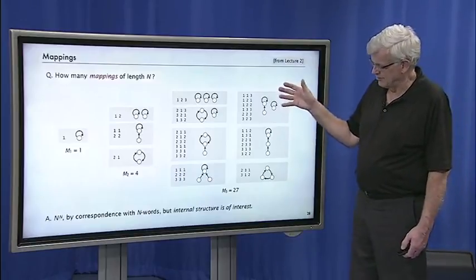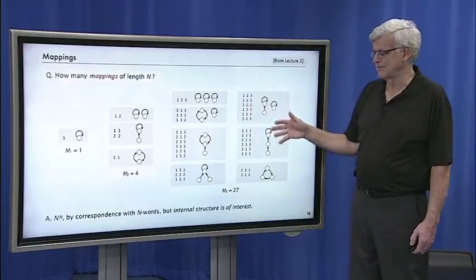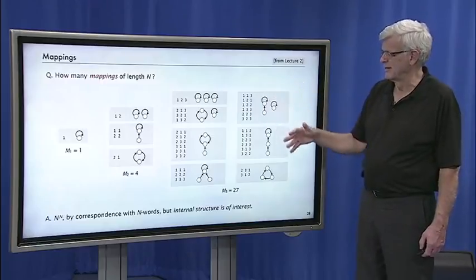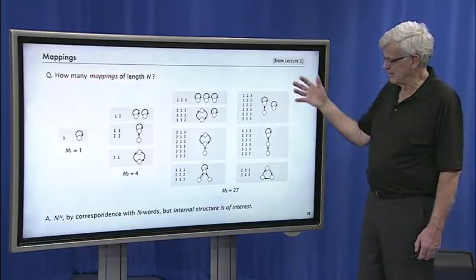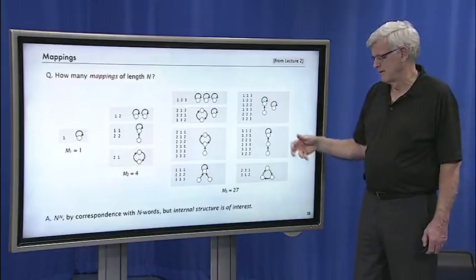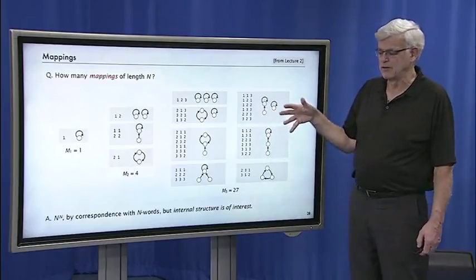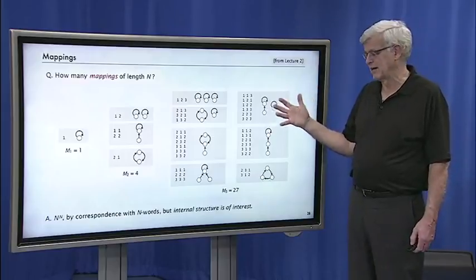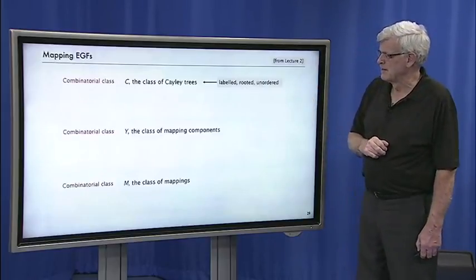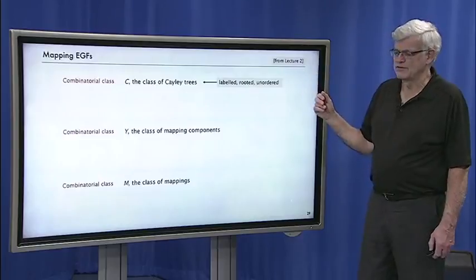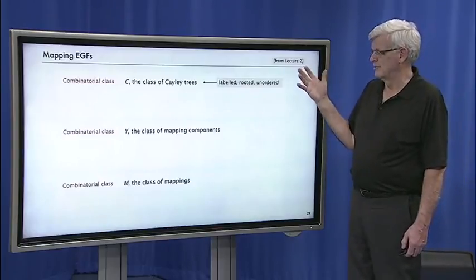But the internal structure is of interest in plenty of applications. So this is another way to break out the number of mappings. And with analytic combinatorics, we're going to take a look at the structure. And that also allows us to analyze average values of parameters.